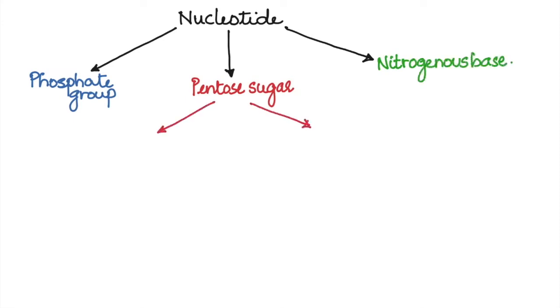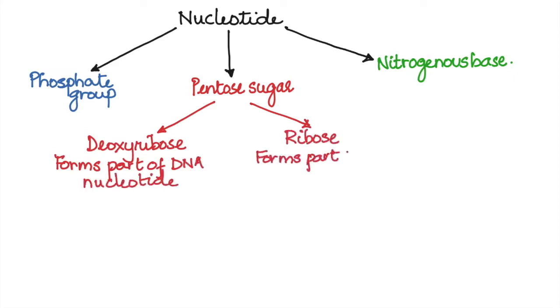The pentose sugar is of two types. It can be deoxyribose sugar that forms the part of a DNA nucleotide, and the ribose sugar that forms the part of a RNA nucleotide.